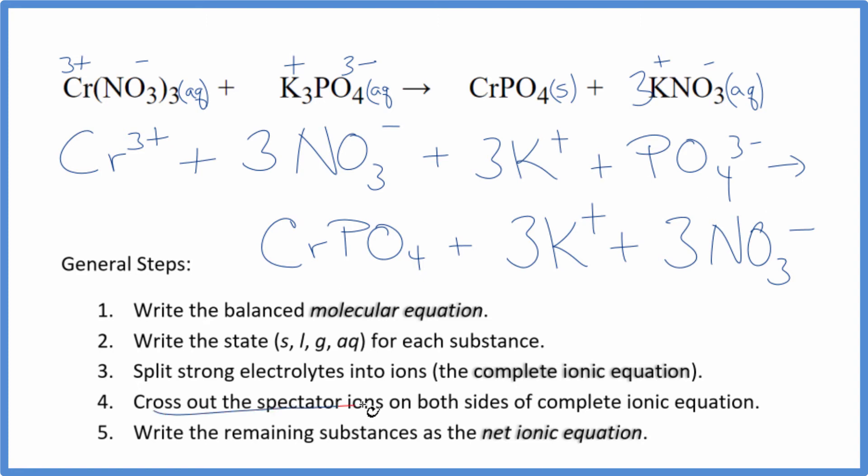At this point, we cross out spectator ions. They're on both sides of that complete ionic equation. So as I look at the reactants, I see three nitrates here. In the products, I have three nitrate ions. Get rid of that.